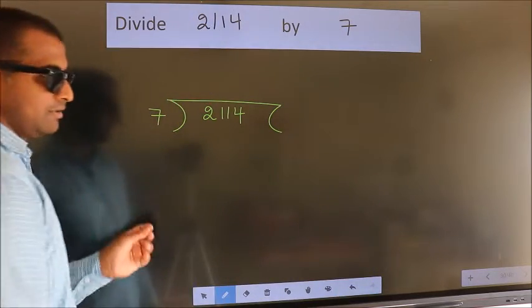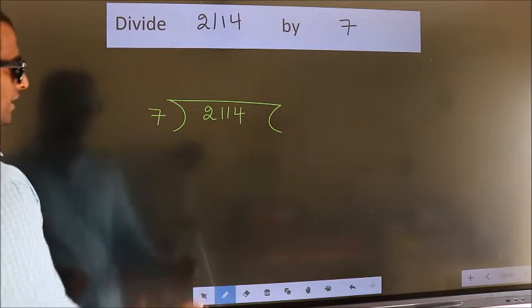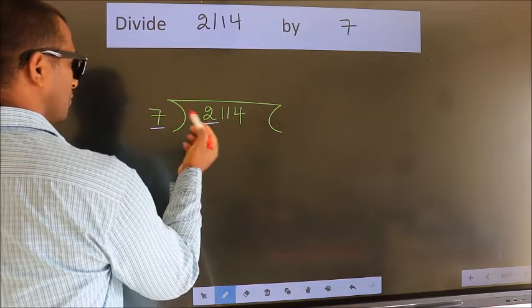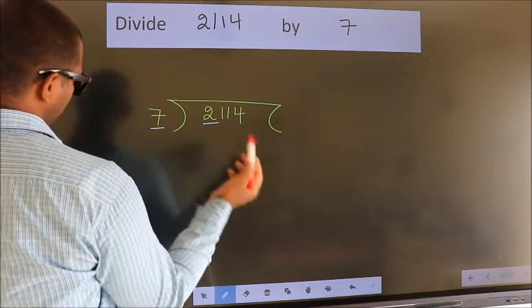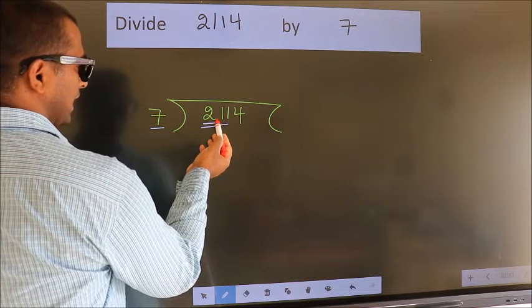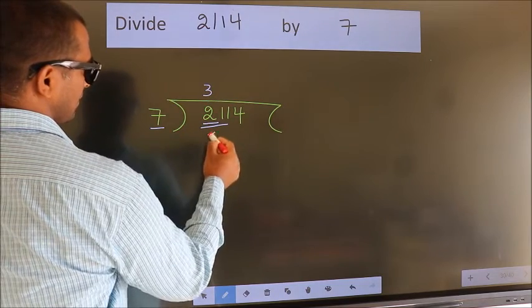This is your step 1. Next, here we have 2. Here 7. 2 is smaller than 7. So we should take 2 numbers: 21. When do we get 21? In the 7 table. 7 threes, 21.